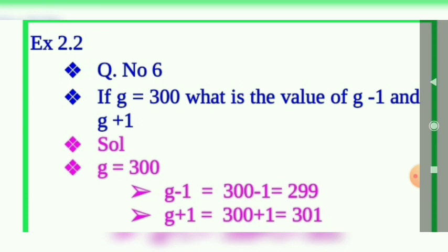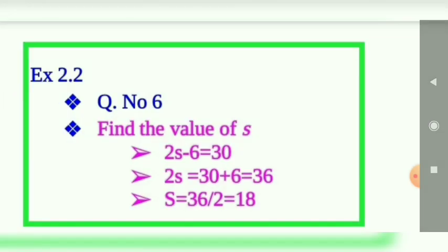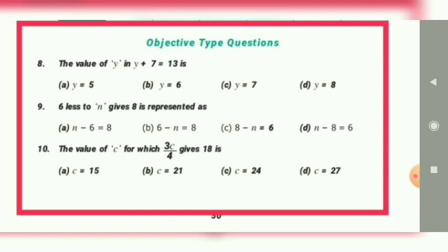Find the value of s. 2s minus 6 equals 30. So that minus 6 comes this side means plus 6. 2s equals 36. s equals 36 divided by 2. That is 2 into s multiplication, so it comes this side means division. So 36 divided by 2, that is equal to 18.